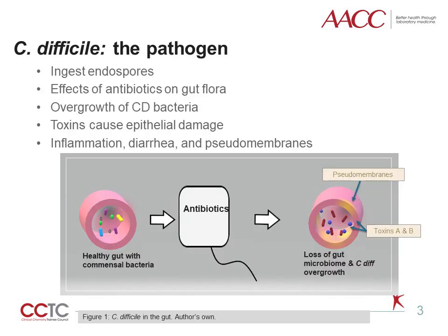C. difficile is acquired when an individual ingests endospores, which travel through the acidic gastric environment before germinating in the intestine. When antibiotics or other insults change the balance of an individual's gut bacteria, germinated C. difficile begins to overgrow and colonize the large intestine. However, many people with C. difficile colonization do not get sick for reasons that are still not yet clear.